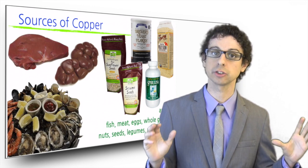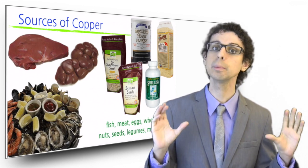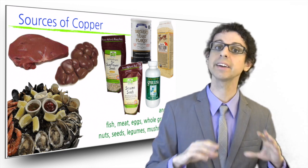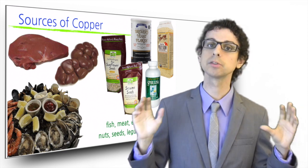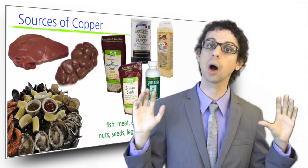Organ meats and shellfish are the richest sources of copper. Just a few bites of calf liver are enough to cover the daily requirement for this mineral. A couple of medium-sized oysters will also do the job.